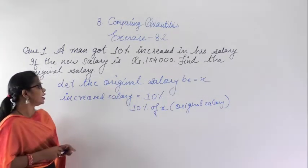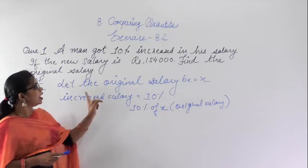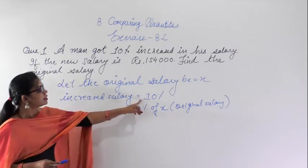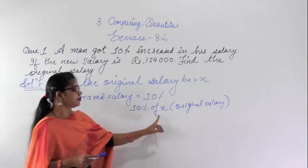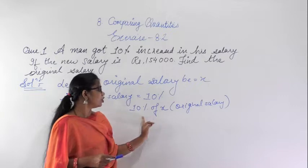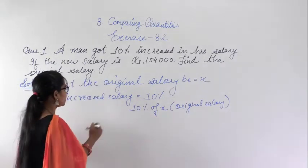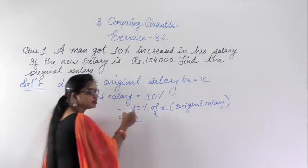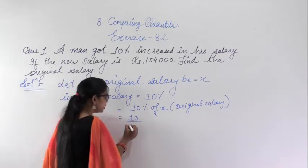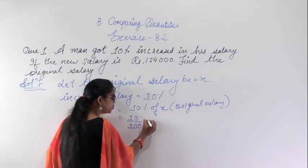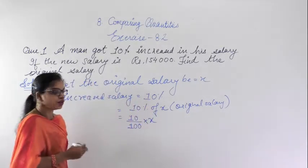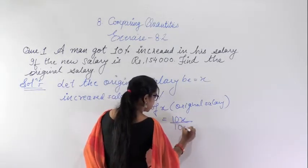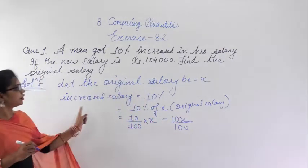We have to find out the original salary. It is given that the increased salary is 10% of the original salary. That means 10% of X, or 10% of the original salary. So the increased salary will be 10 percent, and because of percent we divide by 100, into X. So you can write this as 10X over 100. This is the increased salary.